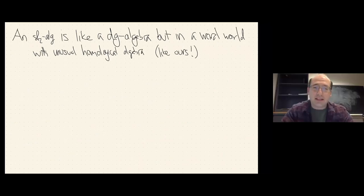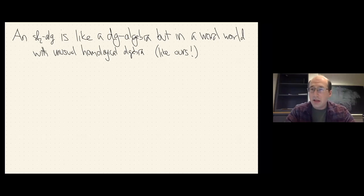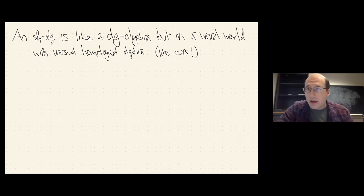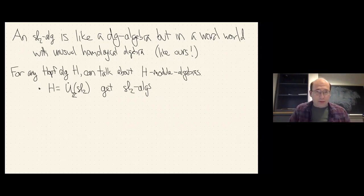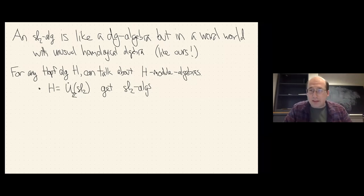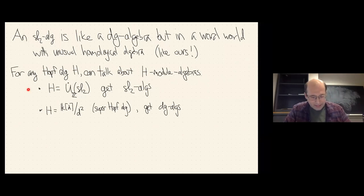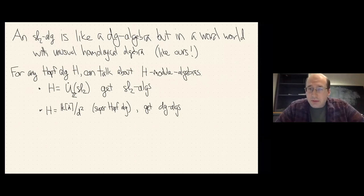You should think of an SL2 algebra as like a DG algebra, but in some weird twisted world where homological algebra is different. Instead of having operator D with D² = 0, you have an action of SL2. This is part of a more general construction: for any Hopf algebra you can talk about H-module algebras. If the Hopf algebra is the integral form of SL2, you get SL2 algebras. If the Hopf algebra is k[D]/(D²), which is only a Hopf algebra in the category of super vector spaces, then you get the usual notion of DG algebras. A DG algebra is to an SL2 algebra as this Hopf algebra is to that Hopf algebra.